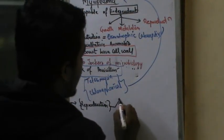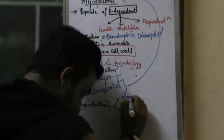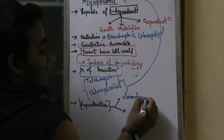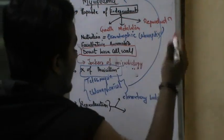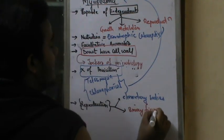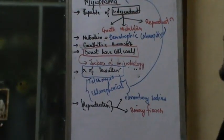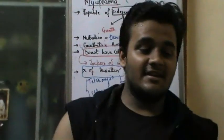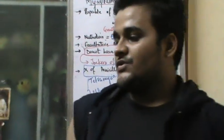The reproduction in Mycoplasma is by two types: one is by forming elementary bodies — small elementary bodies or microspore-like structures — and the other is by binary fission. This is NCERT example as well as NCERT practicals, all clubbed together.